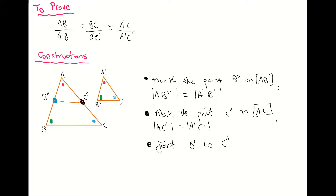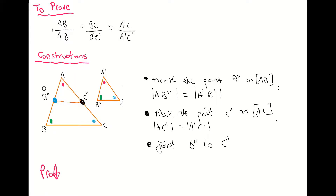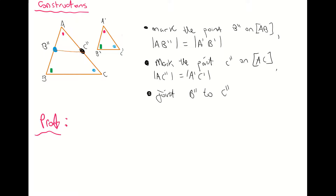Next thing we're going to do is move on to our proof. As I said at the start of the video, we are going to need a lot of our Theorem 12 knowledge here, so make sure you've viewed Theorem 12 before moving on. The first thing we know is that we have two congruent triangles: triangle A'B'C' is congruent to triangle AB''C''. Those two triangles are congruent because we fit the smaller triangle into the larger triangle through our constructions above.